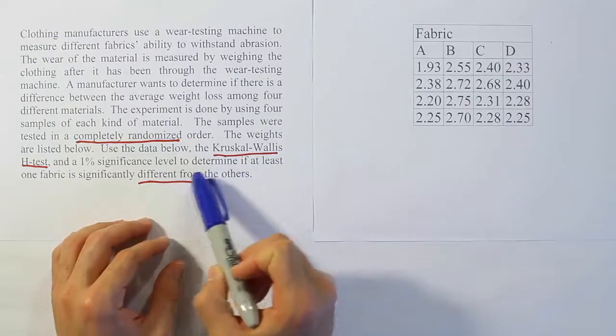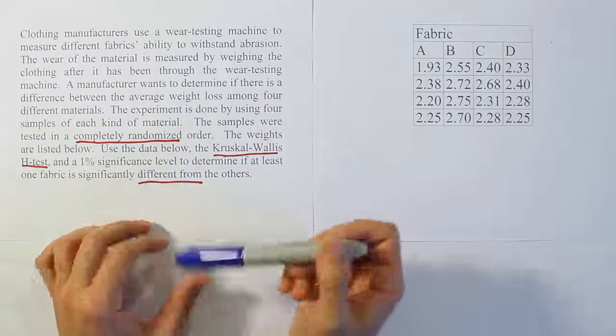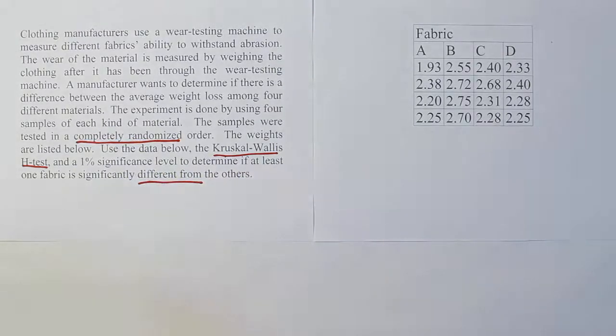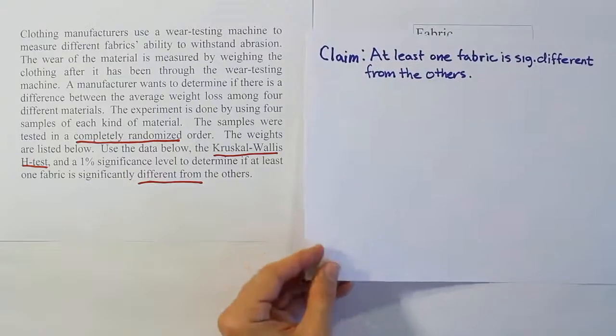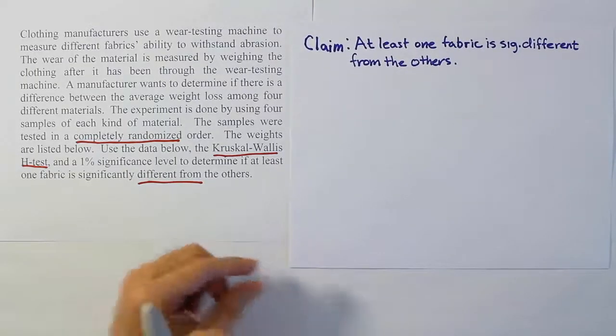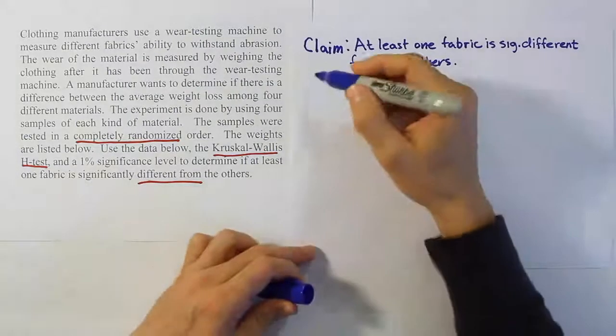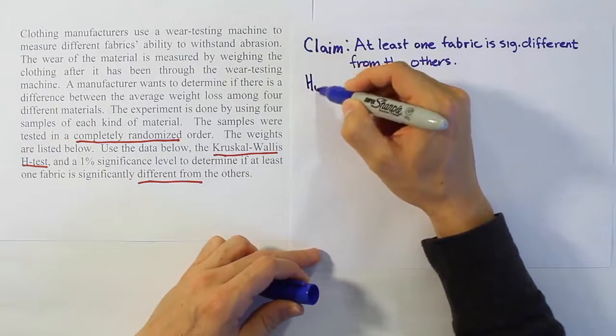The first thing we want to do is express this claim. It says, use a 1% significance level to determine if at least one fabric is significantly different from the others. So I've gone ahead and written that claim down directly from the problem just so we'd have it there.